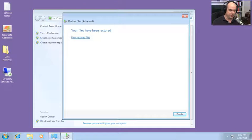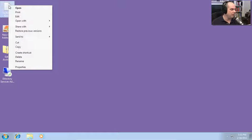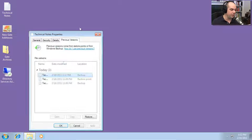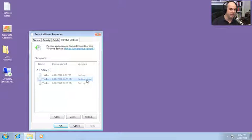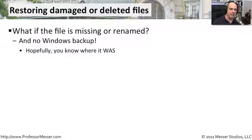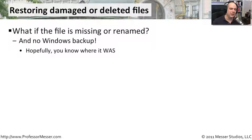We can also restore files from the shadow copy. If you right-click on a file and choose Restore Previous Versions, it will show you what previous versions are available and where those are located. You can see a restore point right here — that's the shadow copy. It was automatically added to that restore point, and now I could restore from it, copy it, or open the file. However, if you renamed or deleted a file, you would not have a file there to right-click on to see if there was a previous version — there's no way to do that directly.